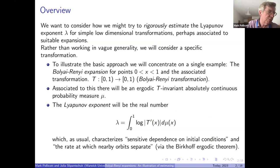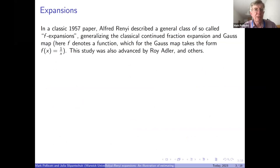The Lyapunov exponent is given by integrating the log of the derivative of the map with respect to the measure. That's the game: we're going to estimate this number lambda for this particular transformation, and then make some comments about doing it for more general settings.